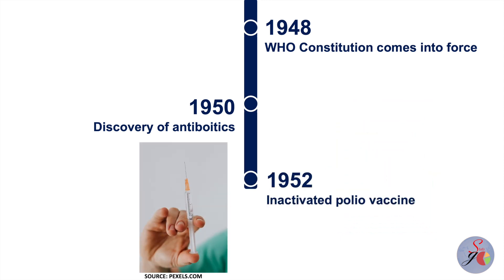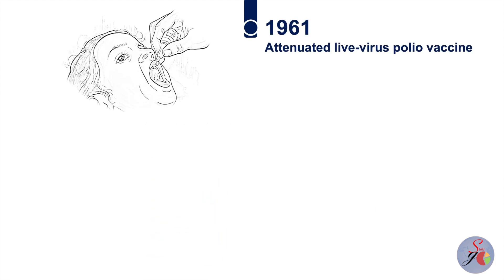In 1952, Jonas Salk developed the inactivated polio virus vaccine given by injection, which paved the way for mass global campaigns facilitated by countries, WHO and other partners, leading to the near eradication of polio. Later in 1961, Albert Sabin developed the attenuated live virus vaccine given orally.